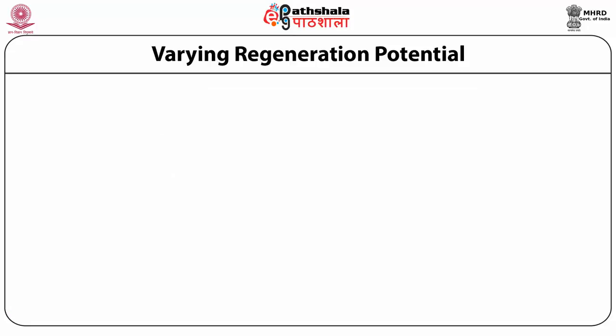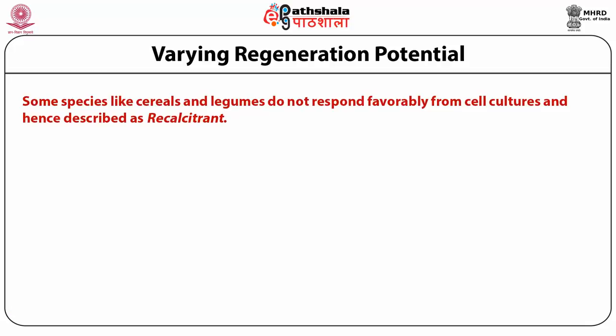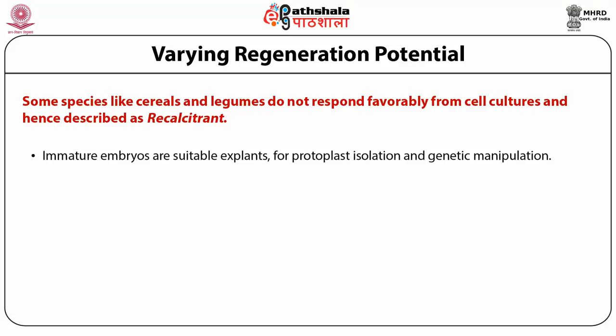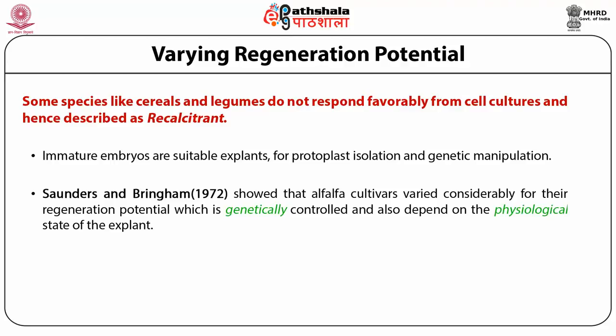It was found that immature embryos were suitable explants for protoplast isolation and thereafter genetic manipulation. It was found by Saunders and Bingham that alfalfa cultivars vary considerably in regeneration potential — different genotypes respond differently to tissue culture. So regeneration potential is controlled genetically as well as it depends on the physiological state of the plants. The older the tissue, the more recalcitrant it is.